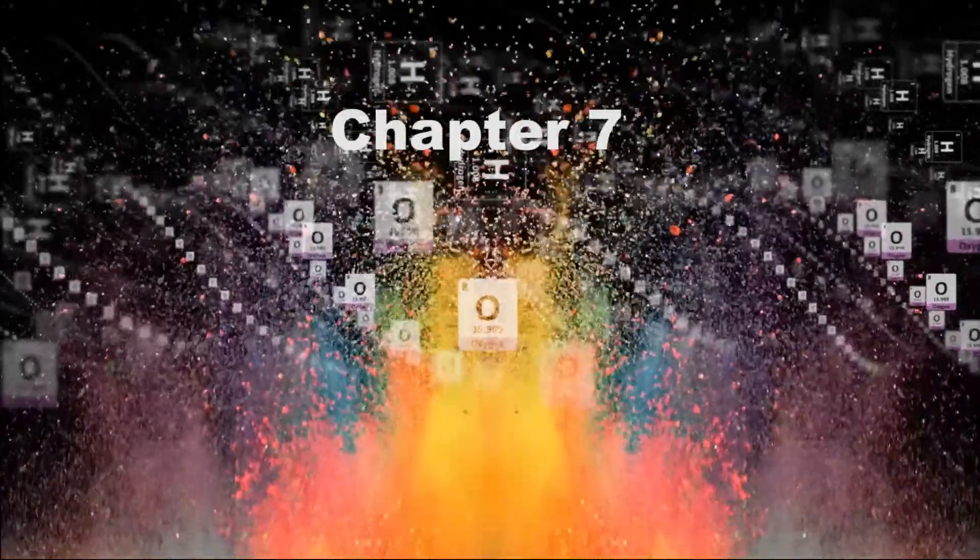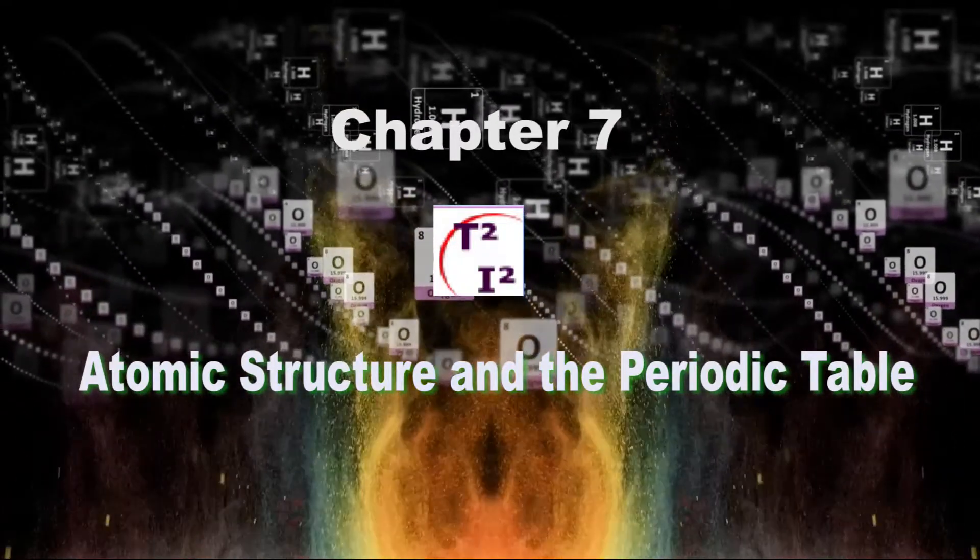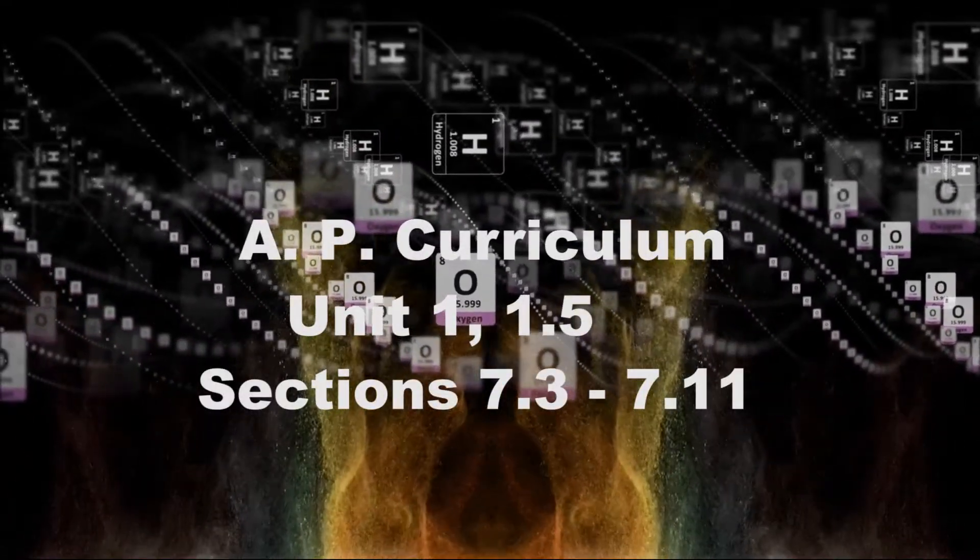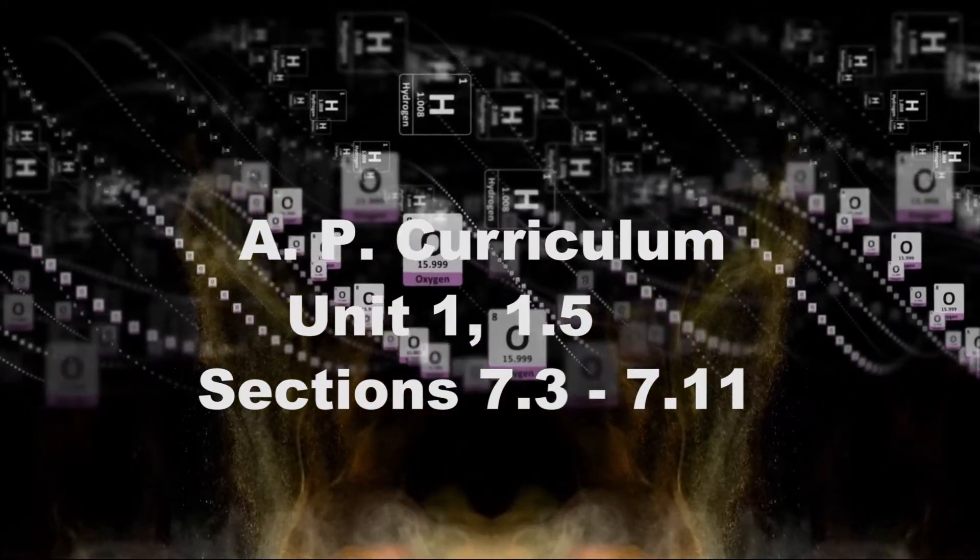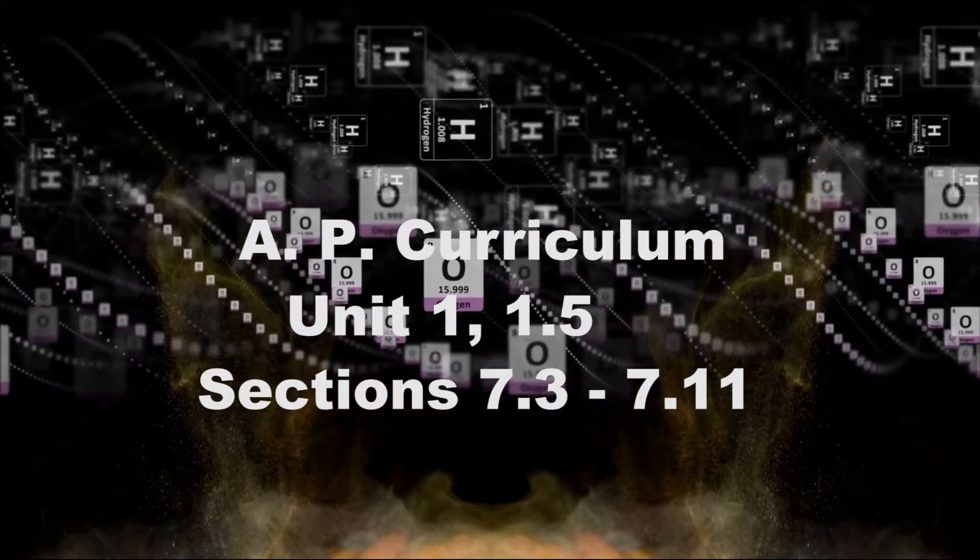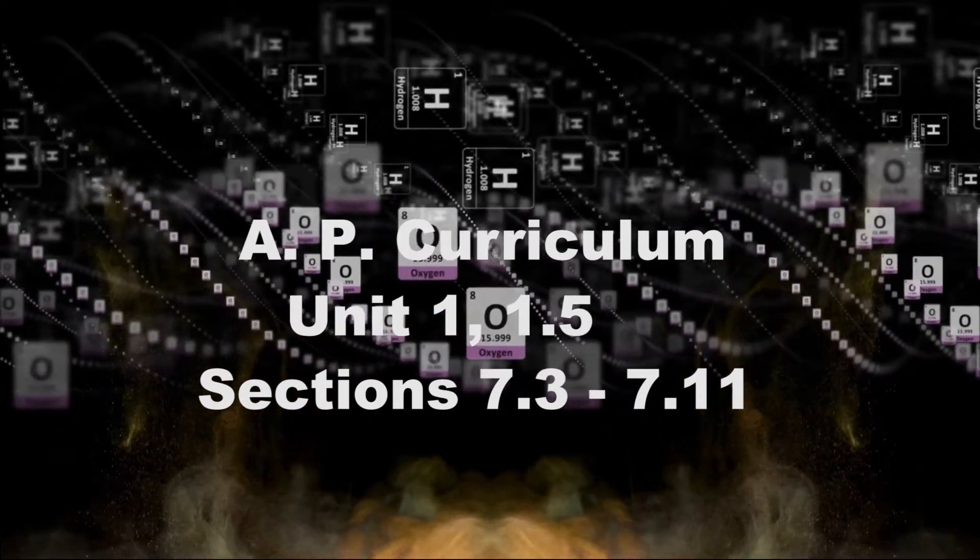Hello and welcome to Chapter 7, Atomic Structure and the Periodic Table. The AP Curriculum requires you to know atomic structure and electron configuration, refer to Unit 1.5. This is covered in Sections 7.3 to 7.11 in the eChapter.